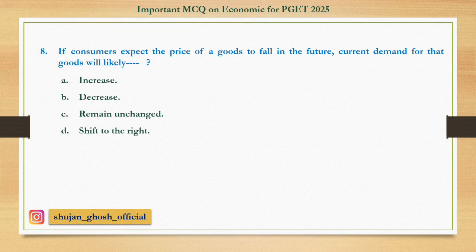Question number eight: If consumers expect the price of a good to fall in the future, current demand for that good will likely — option A: increase; B: decrease; C: remain unchanged; D: shift to the right. Answer: decrease.